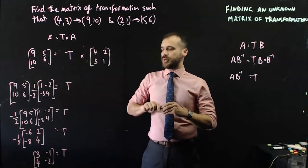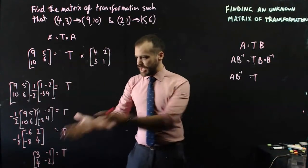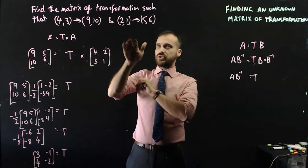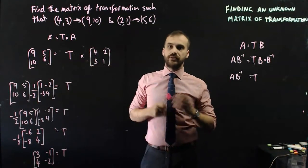And I've solved my question. This is the matrix, or the transformation matrix, that will map (4,3) onto (9,10) and (2,1) onto (5,6).